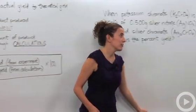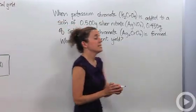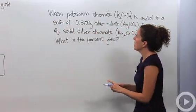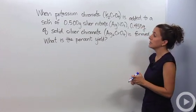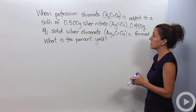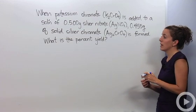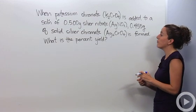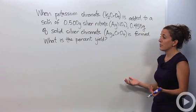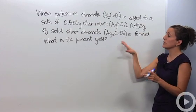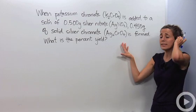Let's do a problem based on percent yield. When potassium chromate, K₂CrO₄, is added to a solution of 0.500 grams of silver nitrate, AgNO₃, 0.455 grams of solid silver chromate, Ag₂CrO₄, is formed. What is the percent yield? We're first going to write the reaction — what exactly took place.